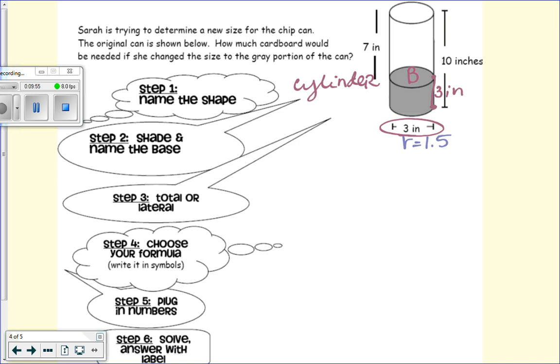All right. And are we finding total or lateral? Yeah. Let's read the question. How much cardboard would be needed if she changed her size to the gray portion of the can? We're going to go with total. I know if it said it was a Pringles can, it would be lateral, right? Because the top is plastic and the bottom is like metal, right?